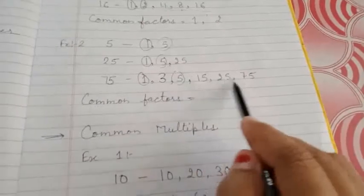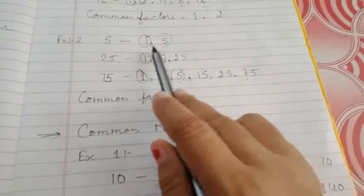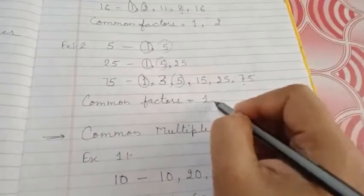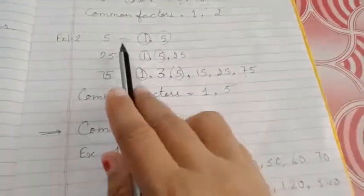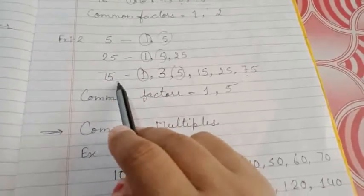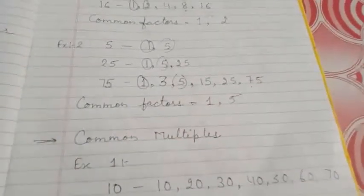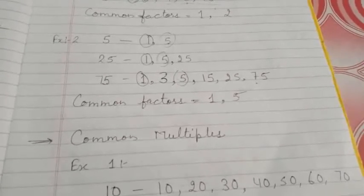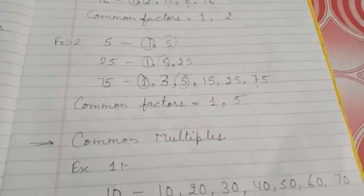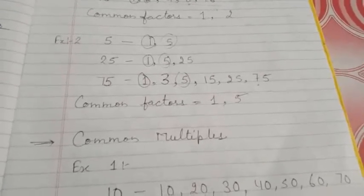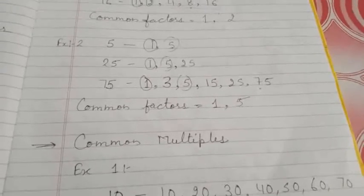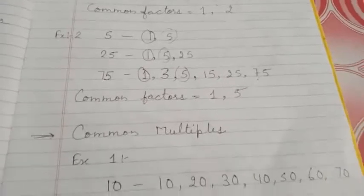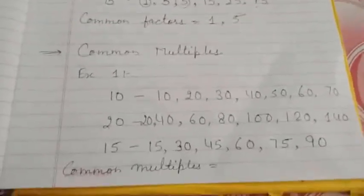No other factor can be common because 5 has only 2 factors. So the common factors of 5, 25, and 75 are 1 and 5. What we have to do is: write all the factors of the given numbers, then select the factors which appear in all the given numbers — those will be the common factors. Now let's learn about common multiples.